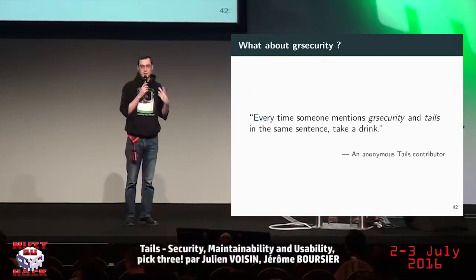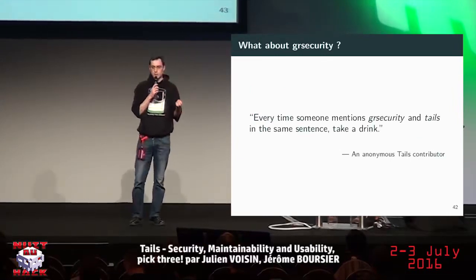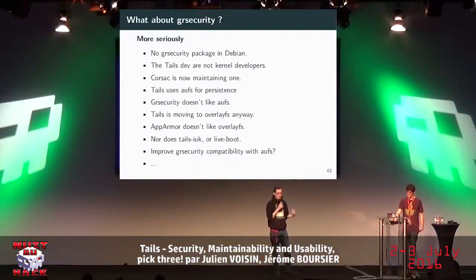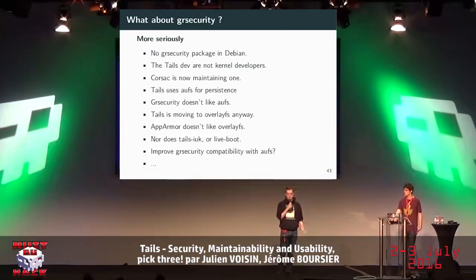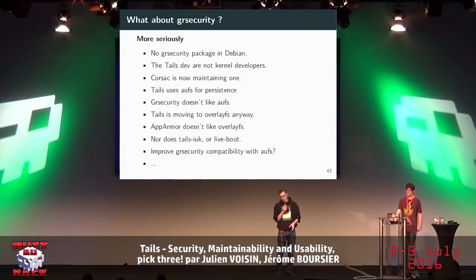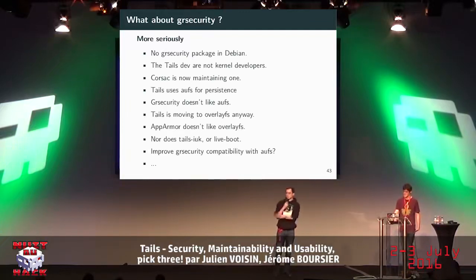GrSecurity is a recurring question every time Tails is mentioned. At the beginning there was no GrSecurity package in Debian. Tails kernel developers are busy enough building an ISO without also having to learn how to package a kernel. There is a French developer named Corsac maintaining a GrSecurity package in Debian, which is great, but unfortunately Tails uses AUFS for persistence and GrSecurity doesn't like AUFS. Tails is moving to OverlayFS, which is great, but AppArmor doesn't like OverlayFS either. So we don't have GrSecurity for now, but if you'd like to help, we'd be happy.